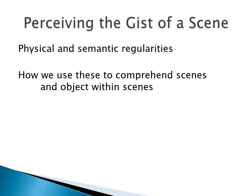To finish up: perceiving the gist of a scene involves physical and semantic regularities — we're going to be talking about that and how we use these to comprehend and perceive scenes as well as objects within scenes. It will start to sound like bottom-up versus top-down processing. Physical regularities are somewhat bottom-up — what's actually out there. Semantic regularities are very much top-down — from our experience and background knowledge. What we expect to see in a particular scene will influence where we expect objects to be and how we perceive those scenes.